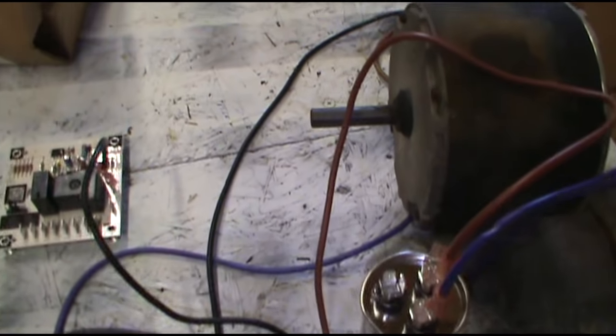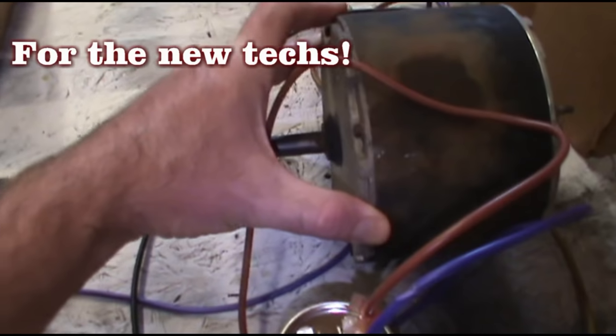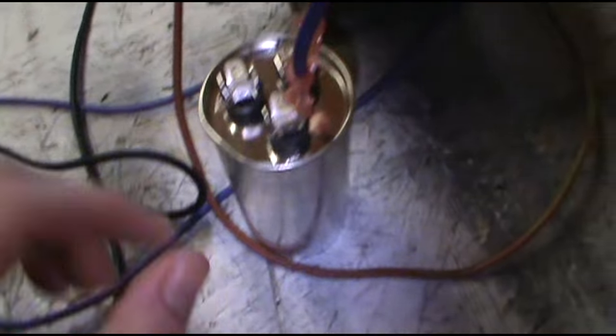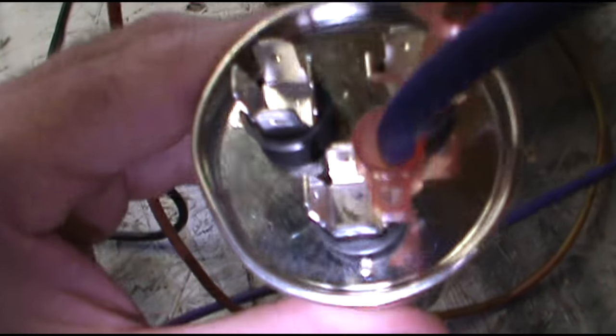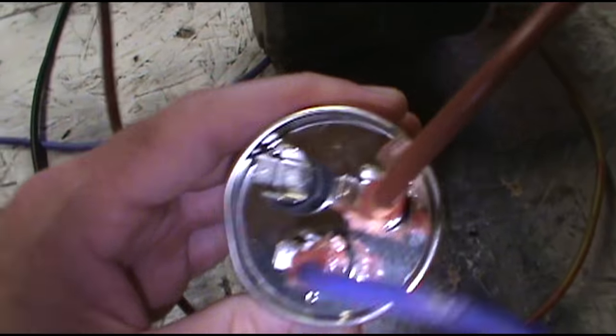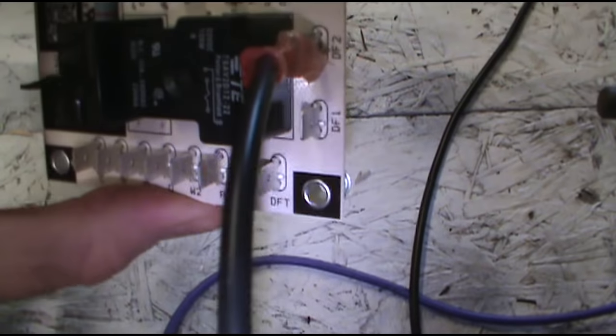Today I want to do a tutorial on how to troubleshoot a condenser fan motor. This came off a Goodman heat pump and it's just three wires: black, purple, and brown. Your purple will be on the common on the capacitor, the brown will be on the fan, and your black wire will be coming off the defrost board off the DF2.